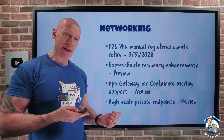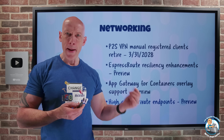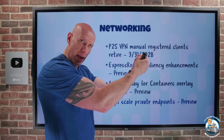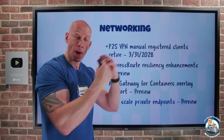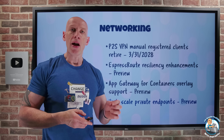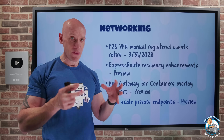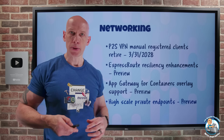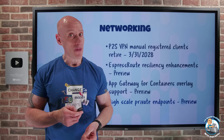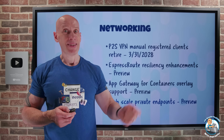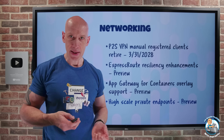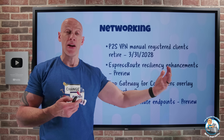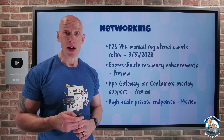High-scale private endpoints: private endpoints give you an IP address in your VNet for a specific resource — either a Microsoft service or behind a private link service. Previously you could have 1,000 private endpoints in a specific virtual network and 4,000 across peered virtual networks. High-scale supports 5,000 private endpoints per VNet and 20,000 across all peered VNets. It's only in certain regions today, but if you need that much higher number of private endpoints, it's an attractive option.